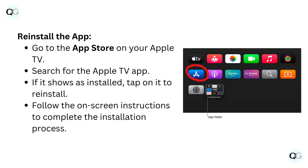To reinstall the app, go to the App Store on your Apple TV. Search for the Apple TV app. If it shows as installed, tap on it to reinstall. Follow the on-screen instructions to complete the installation process.